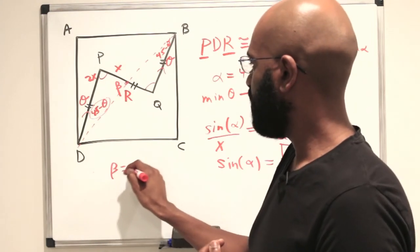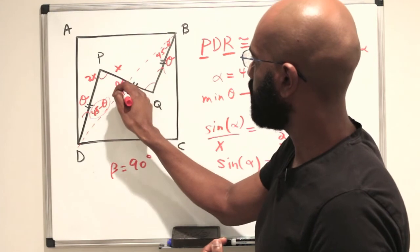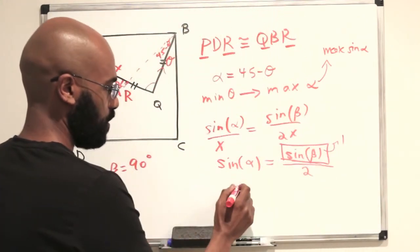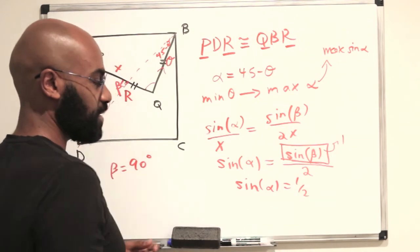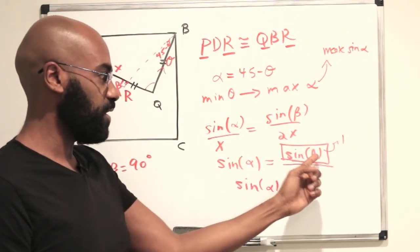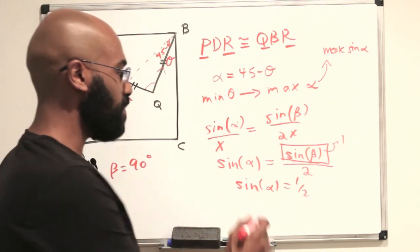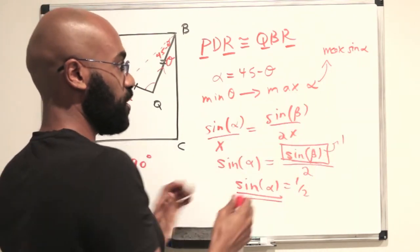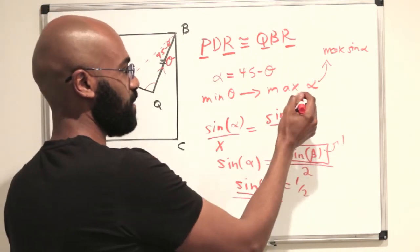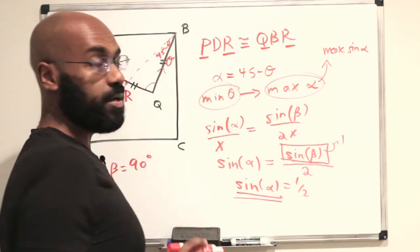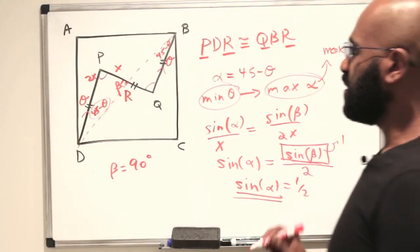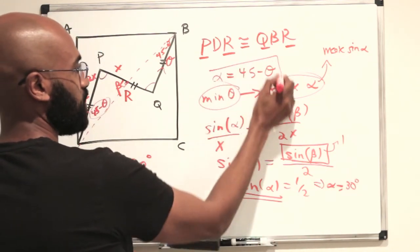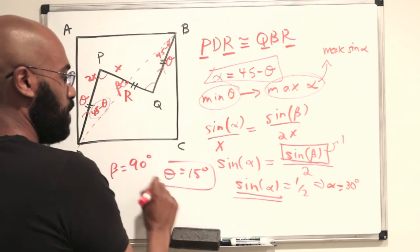Setting beta to 90 degrees gives a right angle in the triangle, and then sine of alpha equals one-half. This is the upper bound for sine of alpha, and we've achieved it. Since sine of alpha is increasing on 0 to 45 degrees, this maximizes alpha — and in turn minimizes theta. With sine of alpha equal to one-half, alpha is 30 degrees, and therefore theta is 15 degrees, exactly as in the first solution.